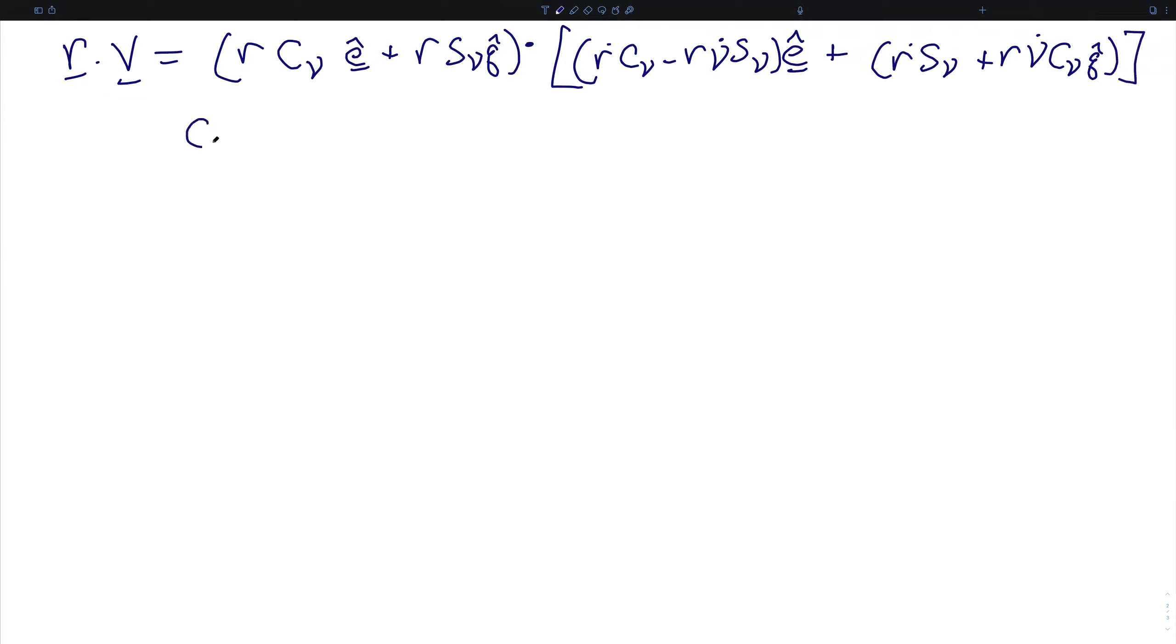I'm using the shorthand here where c sub nu is defined as cosine of nu and s sub nu is defined as sine of nu. And so we've just plugged in the component forms that we've previously derived for the position and velocity vectors. And when you carry out this dot product, what you get is these two terms cancel. Cosine of nu squared plus sine nu squared is 1. And so at the end of the day, all you're left with is r, r dot. And once again, it's incredibly important to remember that scalar r dot is not the same thing as the magnitude of v.